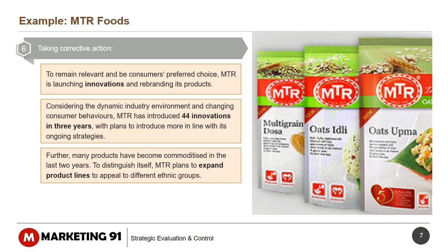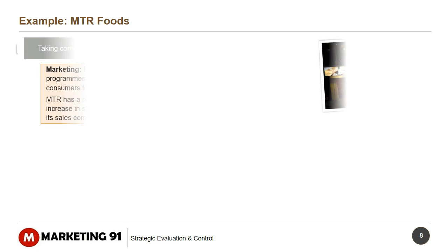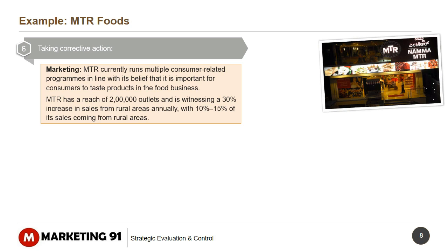Further, many products have become commoditized in the last two years. To distinguish itself, MTR plans to expand product lines to appeal to different ethnic groups. On marketing, MTR currently runs multiple consumer-related programs, believing it is important for consumers to taste products. MTR has a reach of 2 lakh outlets and is witnessing a 30% increase in sales from rural areas annually, with 10–15% of its sales coming from rural areas.